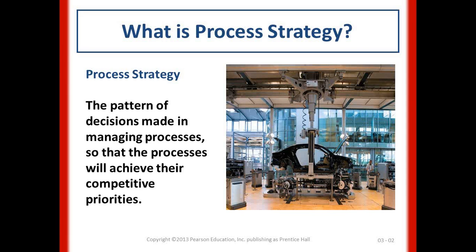A food manufacturing company would use what is known as a batch strategy — batch manufacturing — in which they make small batches of products. For example, a candy company might make strawberry candies in one batch and raspberry candies in another, making different batches to differentiate their products for their customer base.